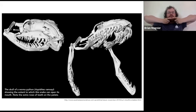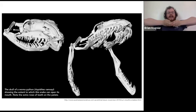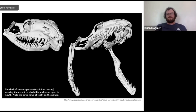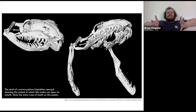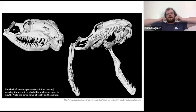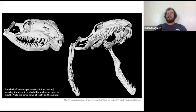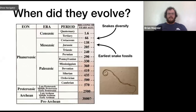Not only can snakes open their mouths down more than we can, but their lower jaws are not connected at the front like ours. Our chins are fused, so we can only open our mouths up and down. Snake jaws can open down and then spread apart. They've also got extra rows of teeth on the roof of the mouth that can walk back and forth — when the snake gets a hold on its prey, those teeth walk the prey item down its throat without needing any hands. Pretty alien and terrifying, but very cool — especially visible in a CT scan of a python.